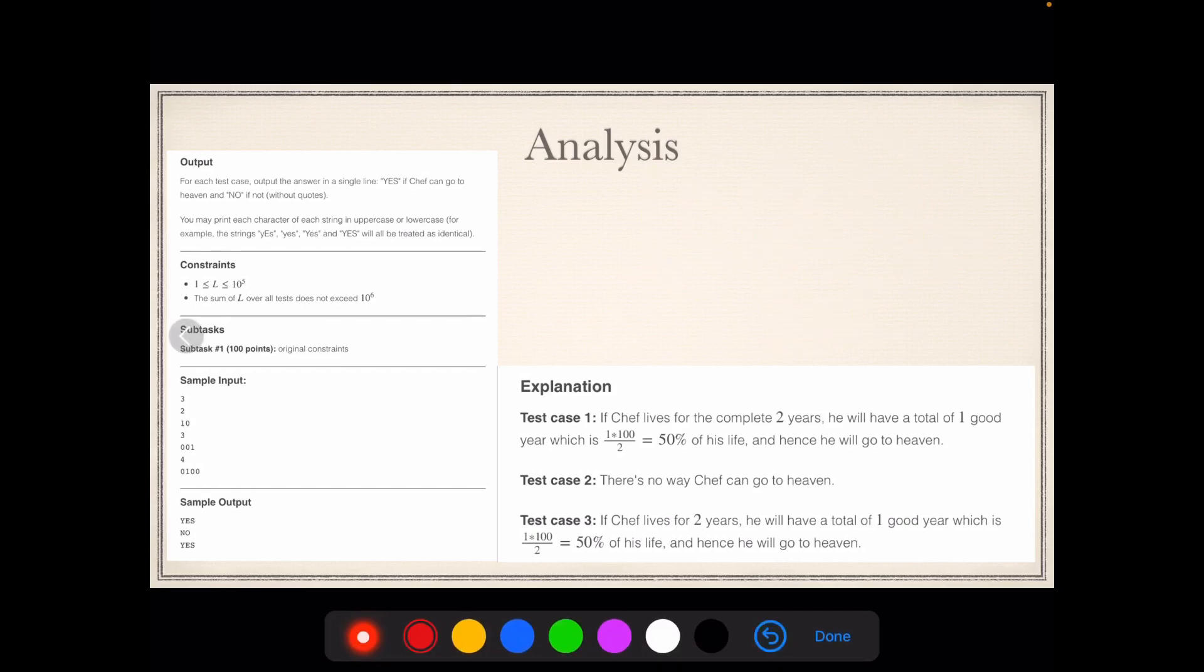See, in the given sample input and output, if I just take a random test case out of it, I get zero, one, zero, zero, zero. We are given this string, and I, as Doctor Strange, as a programmer, have to decide that will Chef go to heaven or hell. With my first analysis...